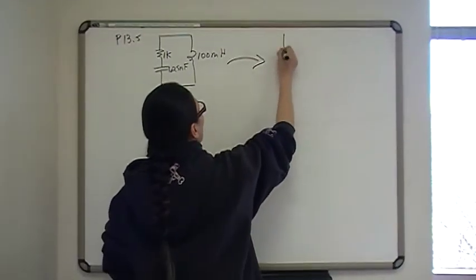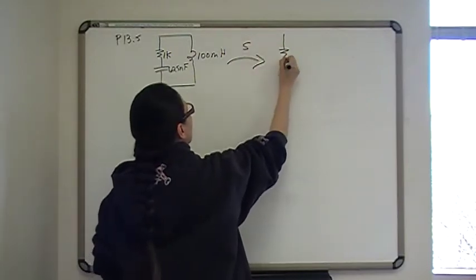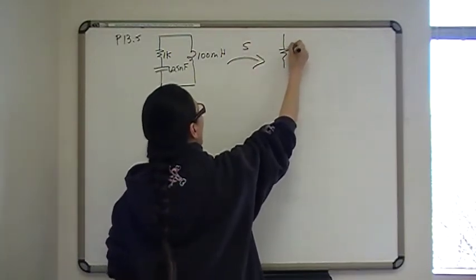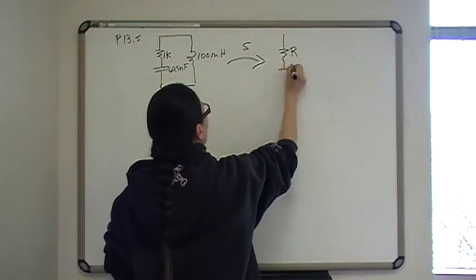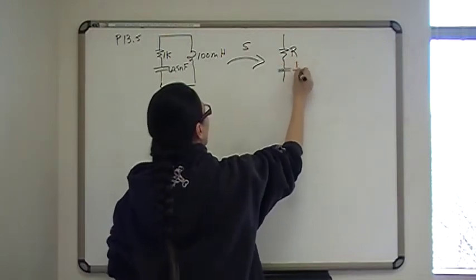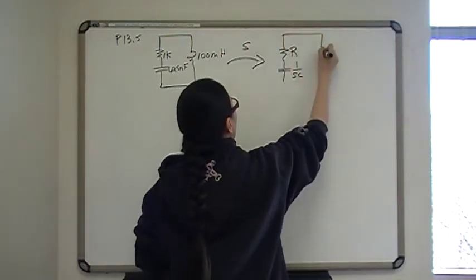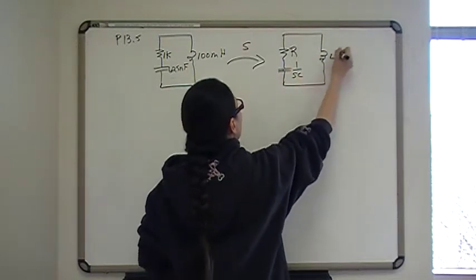So here we're going to make an S transformation. This is going to be R, and a capacitor in the S domain is 1 over SC, and an inductor in the S domain is LS.